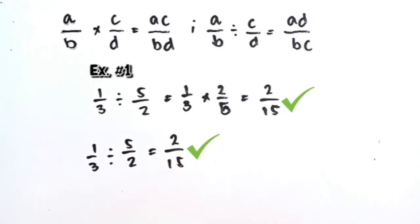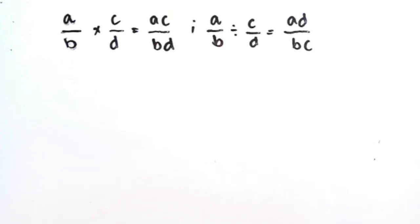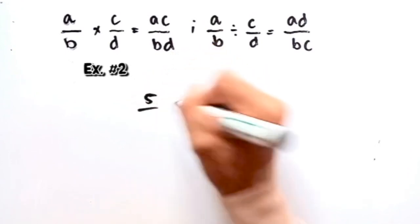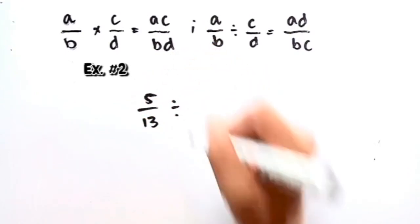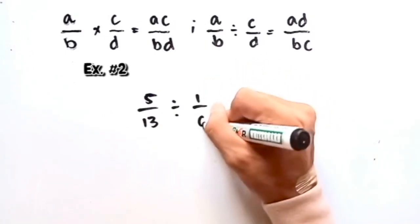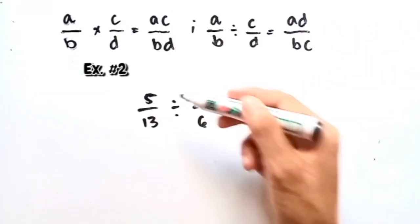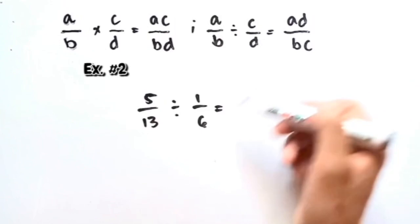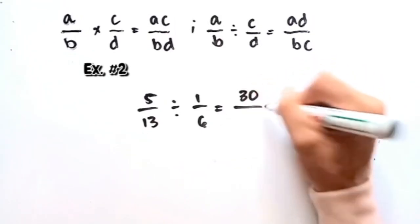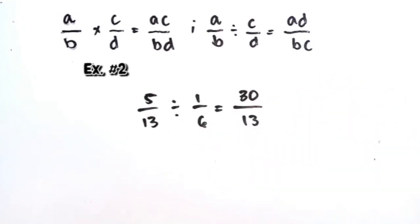Let's proceed to the second example. If we're going to divide 5 over 13 divided by 1 over 6, this will be equal to AD over BC. So A is 5 and D is 6, so 5 times 6 is equal to 30, over 13 times 1, which is still 13. So the answer is 30 over 13.